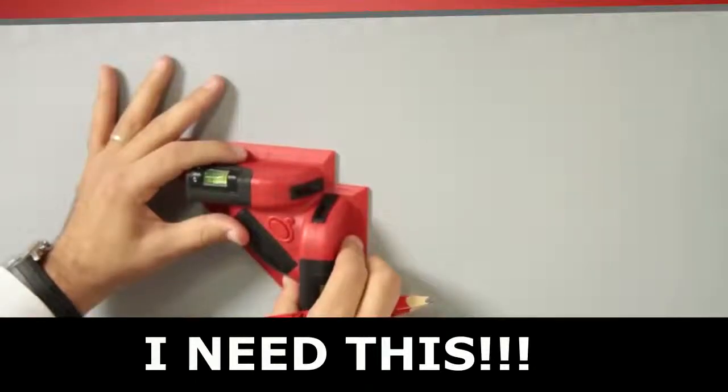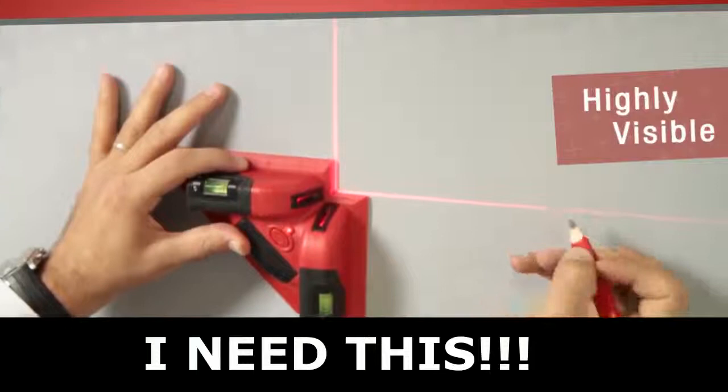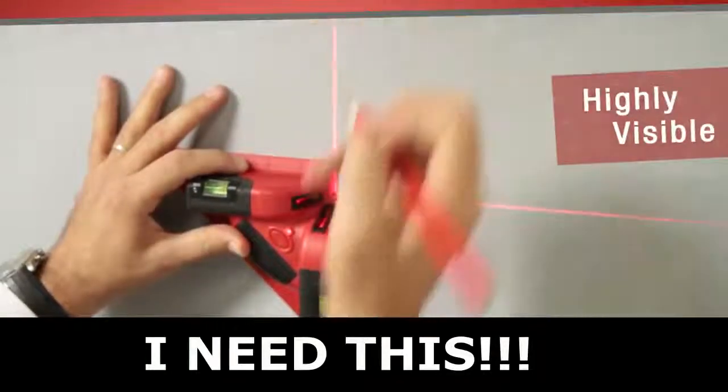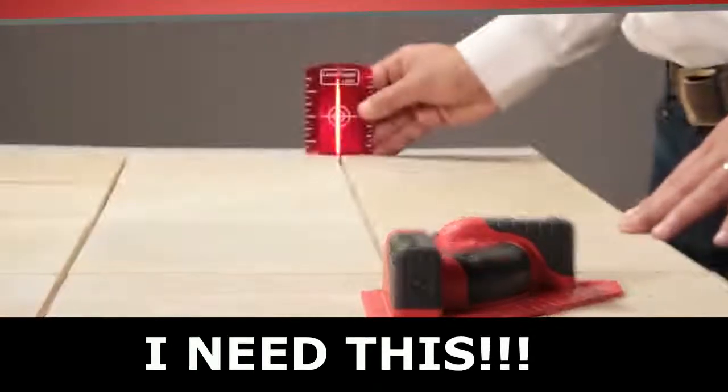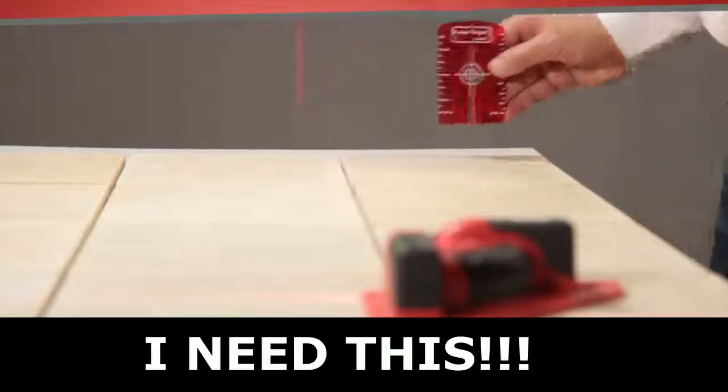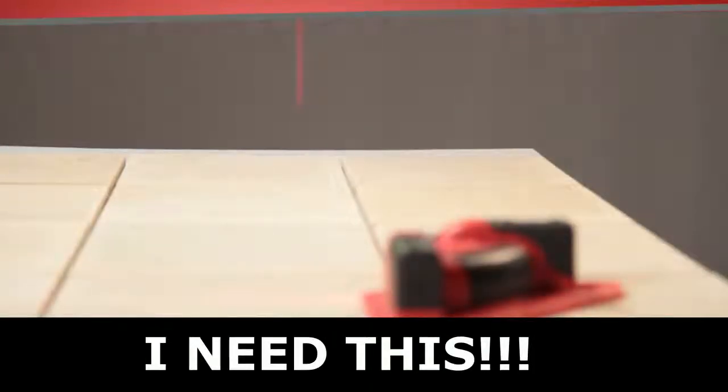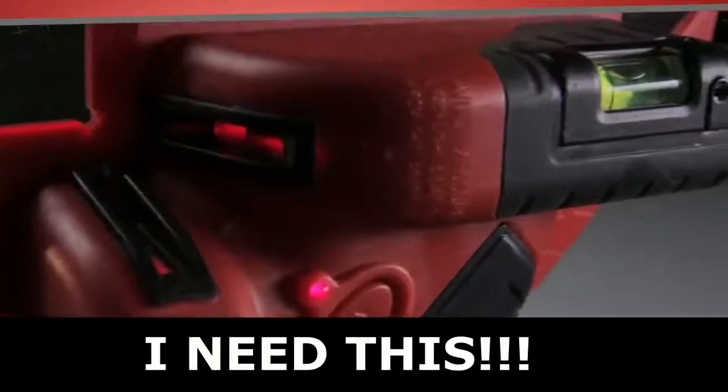Like other laser squares, the 891 projects two highly visible laser lines at a perfectly 90-degree angle across the floor. However, that is where the similarity ends. The 891 ProLaser Square's beams continue to project up the wall, helping you to align your floor layout with the corners and the natural lines in the room. This sets the 891 apart from its competitors.